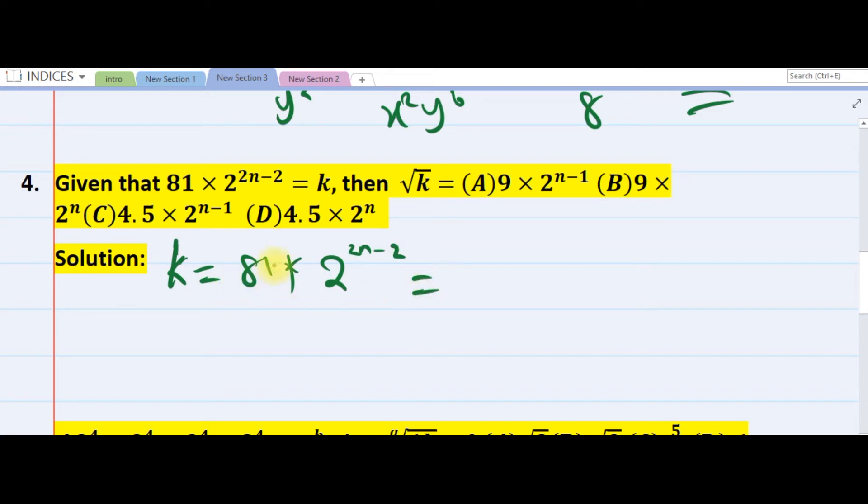You know, I can write 81 - since we are looking for square roots, meaning square must be here so that if you move it, it becomes square root. So I will write the right-hand side in terms of square. This is 9 squared times 2 to the n minus 1.